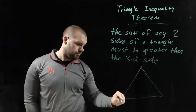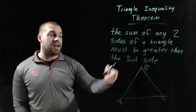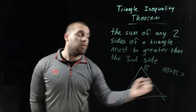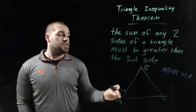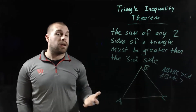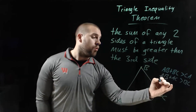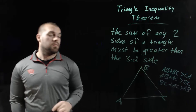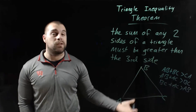Let's say we've got triangle ABC drawn out. If we take sides AB and BC and add those together, it has to be greater than the remaining third side CA. We can do this with all different pairs: AB plus AC has to be bigger than BC, and BC plus AC has to be greater than AB. No matter which pair of sides we choose, when we add them together it always has to be bigger than that remaining third side.